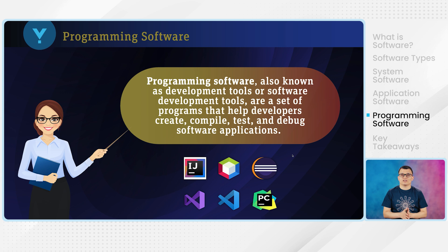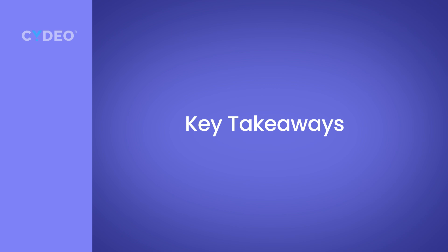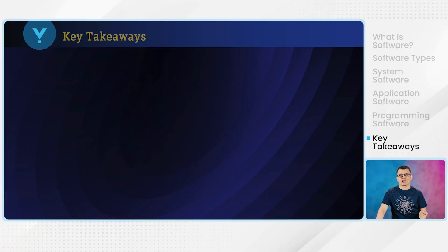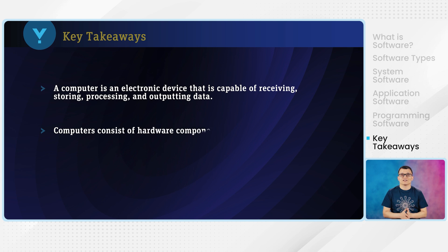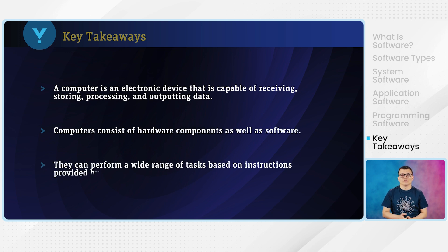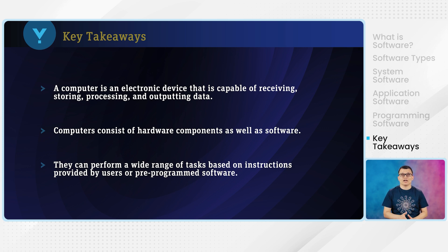With that, we have covered all the different types of software, and this module is now complete. Here are a few key takeaways from this module, Introduction to Computer: you need to know what a computer is — an electronic device capable of receiving, storing, processing, and outputting data. A computer consists of hardware and software components, including the different types of software such as programming software, application software, and operating systems.